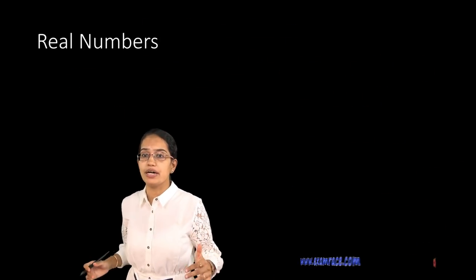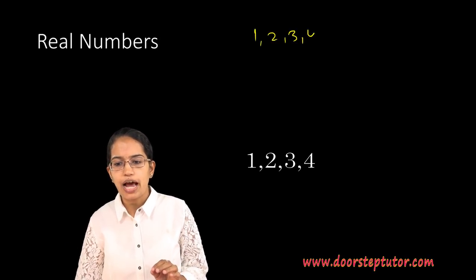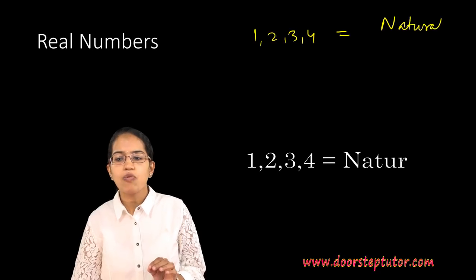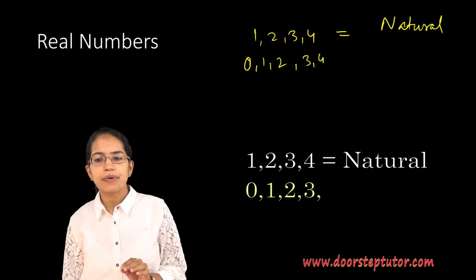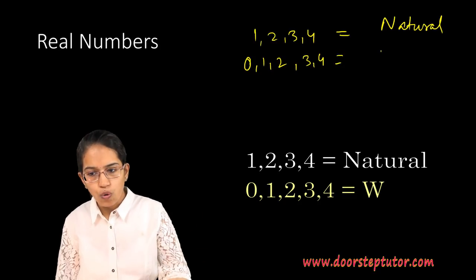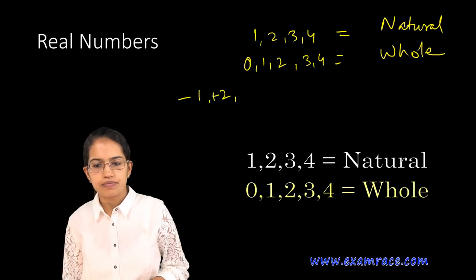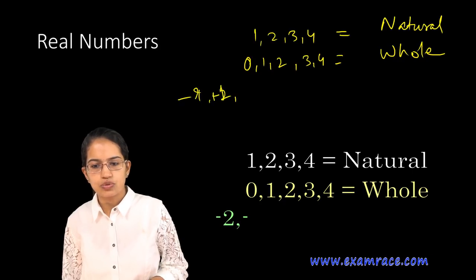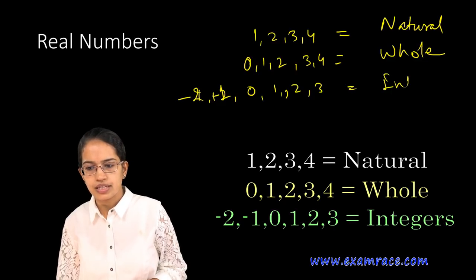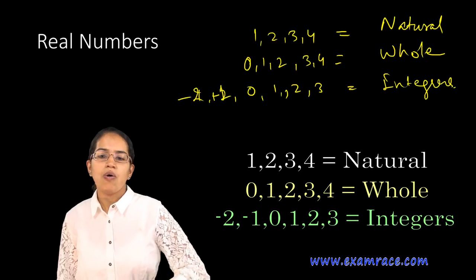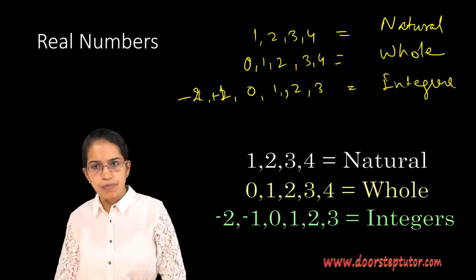Now we come to numbers. We start with 1, 2, 3, 4 — these are natural numbers. When we add 0, these become whole numbers. When we further add negative numbers — minus 1, minus 2, 0, 1, 2, 3 — these become integers. Natural numbers and whole numbers are part of integers.